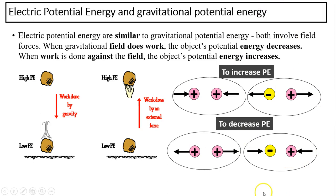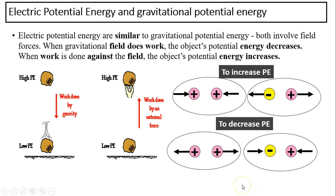To decrease the potential energy, naturally if you put two positive charges next to each other, they naturally separate, and as they separate their total potential energy decreases. Similarly, for a negative and positive charge, they naturally attract each other, and as they move toward each other their potential energy decreases. So when a field does work in the natural way, potential energy decreases. When you work against a field, potential energy increases — in the same way as with a gravitational field.